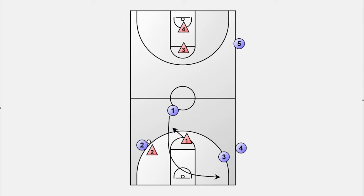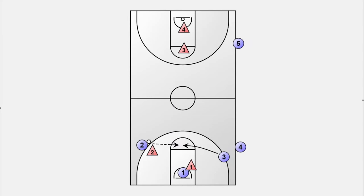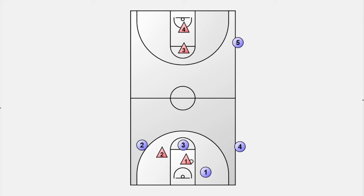This forces the top defender to make a decision — either to stay and let the cutter pass by, or to defend towards the baseline. This opens up the opportunity for player number 3 to show up at the free-throw line. He now has all 3 options depending on what the defender does: take an easy mid-range shot, drive to the hoop, or make an extra pass to the player in the short corner.